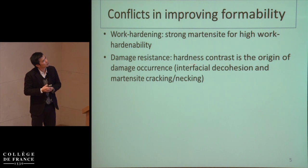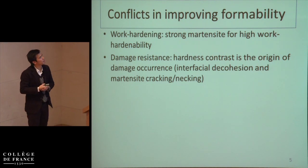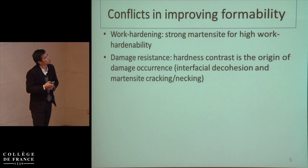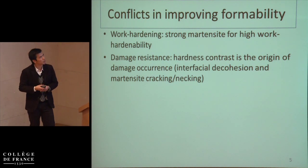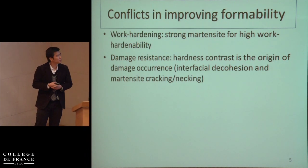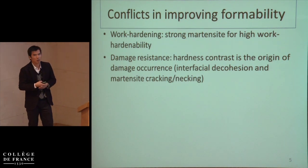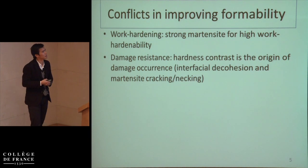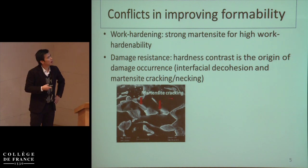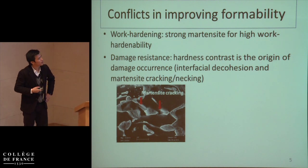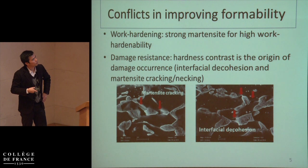When we want to improve damage resistance, it is well known that the hardness contrast between ferrite and martensite is the origin of damage — no matter what kind of damage mechanism, such as interfacial decohesion between ferrite and martensite, martensite cracking, or lacking, depending on the properties of the martensite. This micrograph shows damage by martensite cracking, and this one shows damage by interfacial decohesion.